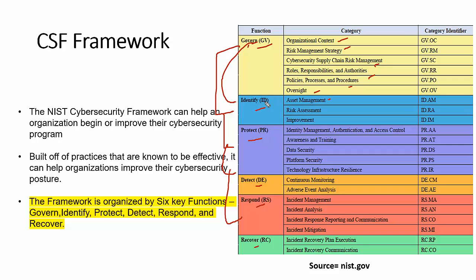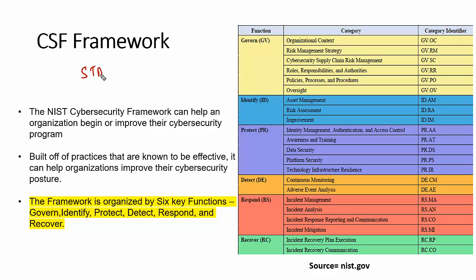Previously we had five key functions, but now in CSF 2.0 we have six key functions used in the cybersecurity framework. Now, the thin-line difference between a framework and a standard: a framework is a guideline — a logical structure that can be adopted and customized according to business requirements.